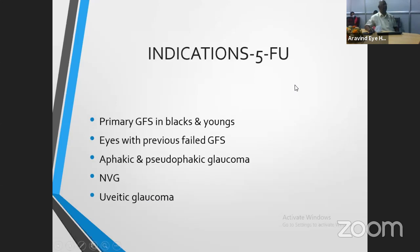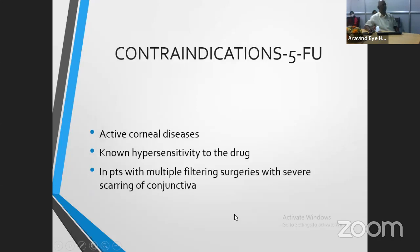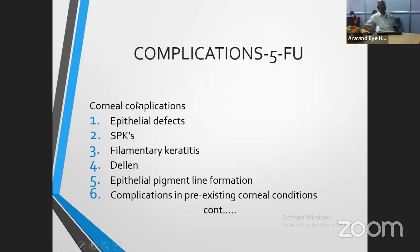Indications of 5-FU — for completion sake, we are not using 5-FU regularly now. All primary glaucoma filtering surgery in blacks and young people, eyes with previously failed filter, aphakic and pseudophakic glaucoma, neovascular glaucoma, and uveitic glaucoma. It is mainly contraindicated in cases with active corneal disease and patients hypersensitive to the drug, and in patients with multiple filtering surgeries with severe scarring of the cornea.